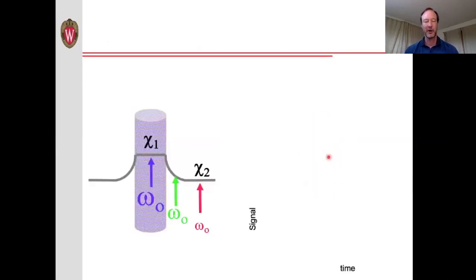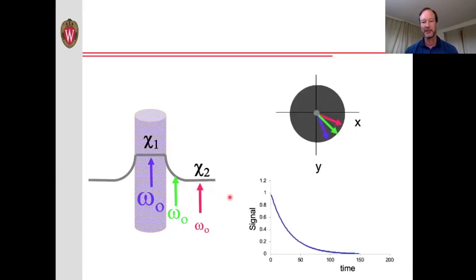As you recall from our lecture on MRI contrast, the precession frequency of the spins is directly proportional to the strength of the magnetic field. So the spins sitting inside the vessel will be precessing at a different frequency than those outside the vessel. As a result, the spins dephase from one another and the signal decreases. This is what we call the T2 star decay.